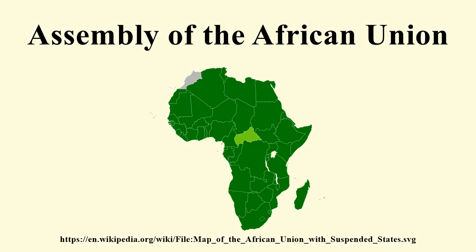Create a budget of the Union. Provide direction to the Executive Council on conflicts, war and other emergency situations and the restoration of peace. Select judges for and withdraw judges of the Court of Justice. Appoint the chairman of the Commission, Commissioners of the Commission, and all respective deputies, and determine how long they will serve and what duties they will perform.